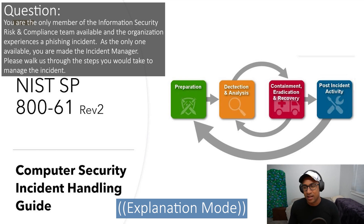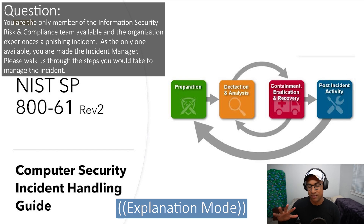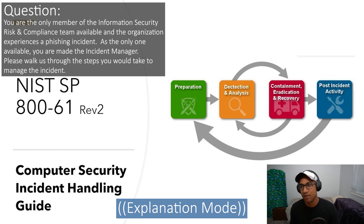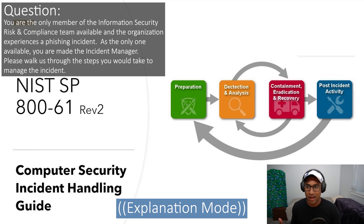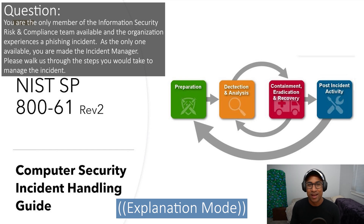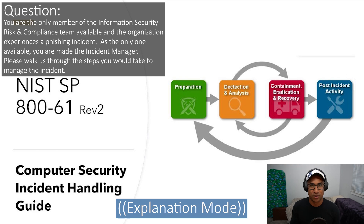Detection and analysis: make sure the incident is actually happening and determine the scope — see if there's any malware that affected your systems. Containment: block the sender from sending more and take infected computers offline. Eradication and recovery: re-image the computers that were potentially affected. And then I talked about the post-incident activity. I tried to describe this off the top of my head. If someone gave me that answer, I'd think they know what NIST 800-61 is, or at least they're familiar with the incident handling process at a high level.